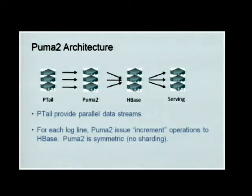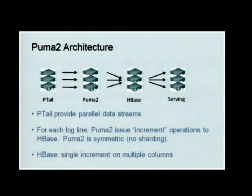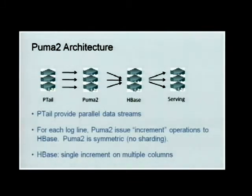The Puma2 services are symmetric, so there's no sharding — we can easily add more machines. A single HBase increment can be applied on multiple columns at once, which is a very nice feature. For demographic breakdowns like group by age or group by gender, we do that in a single HBase instruction instead of multiple ones.